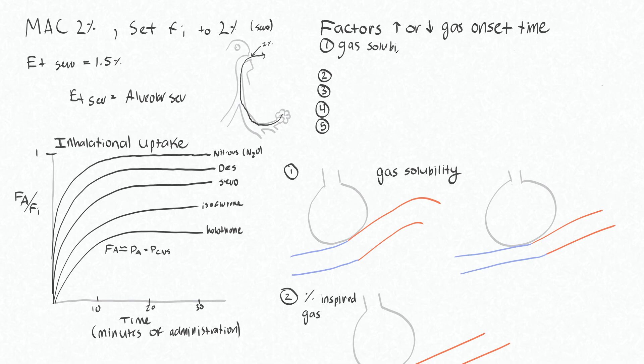So the lower the solubility of the gas, the faster onset time it will have. And this is because the blood saturates more quickly at low solubilities.